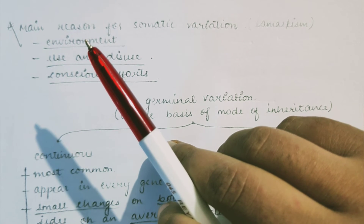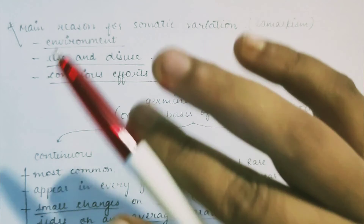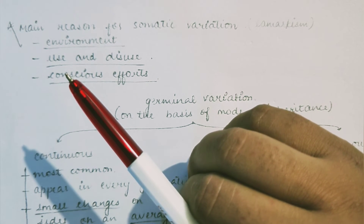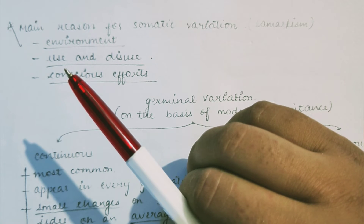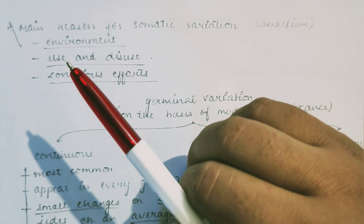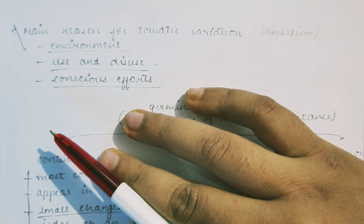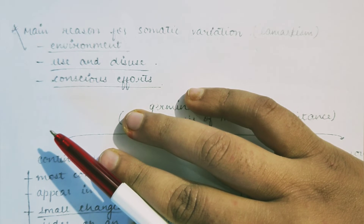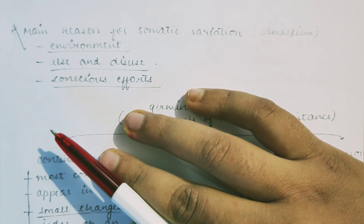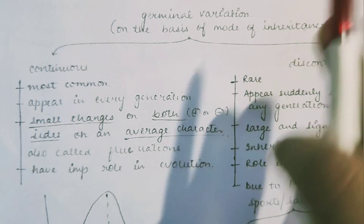The main reason for somatic variation is related to Lamarckism — the theory of use and disuse. For example, if an offspring has wings but does not use them, they become rudimentary and functionless. Lamarck believed that conscious effort — like a giraffe stretching its neck — leads to acquired characteristics, but this has a lot of controversy and has not been proven valid.